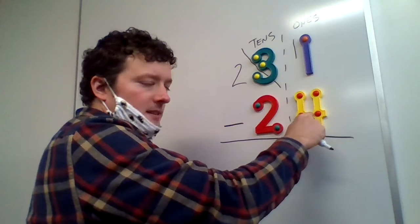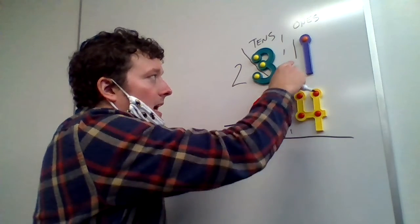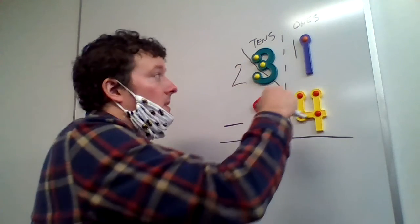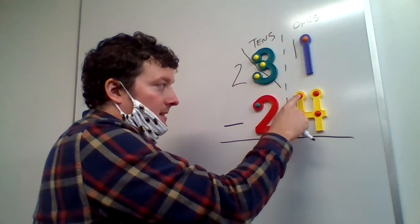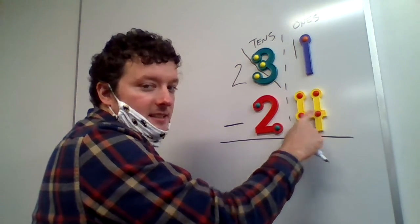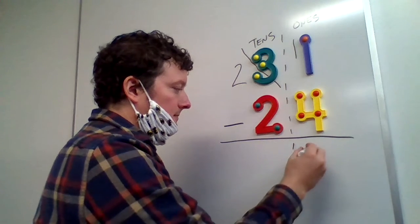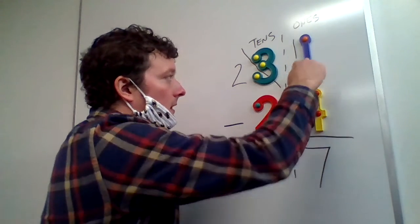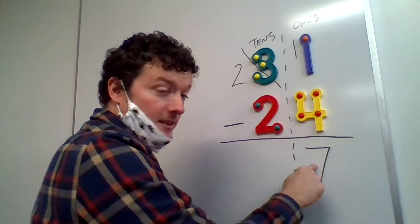So what's 11 subtract four. So let's count backwards. We're counting down from 11. So we have 11, 10, 9, 8, 7. Counting down and our ones column 11 minus four is seven.